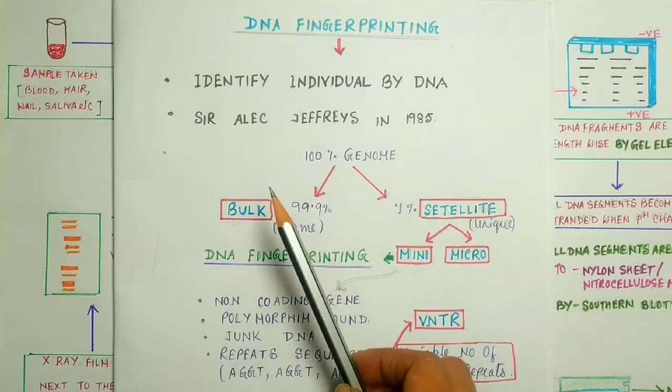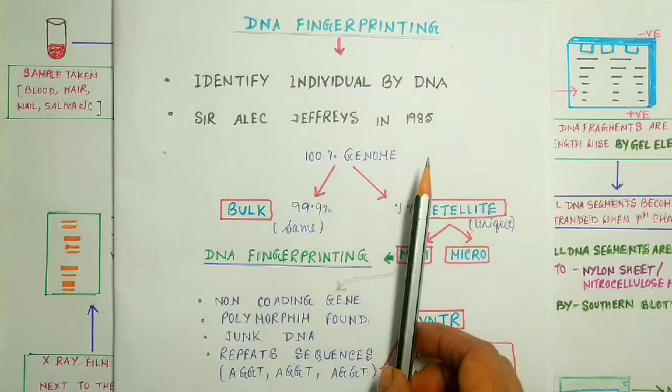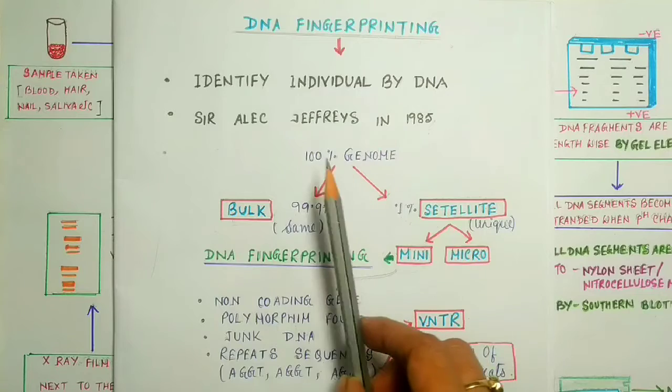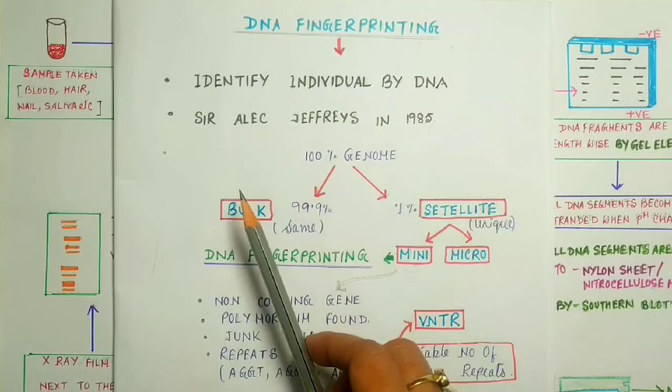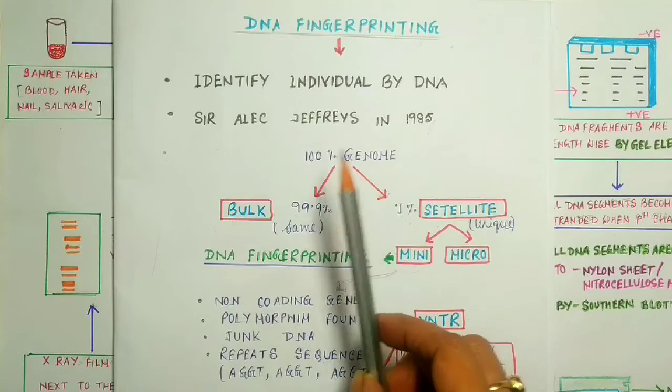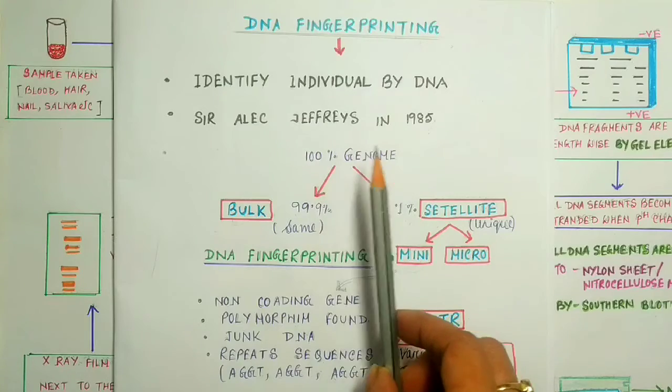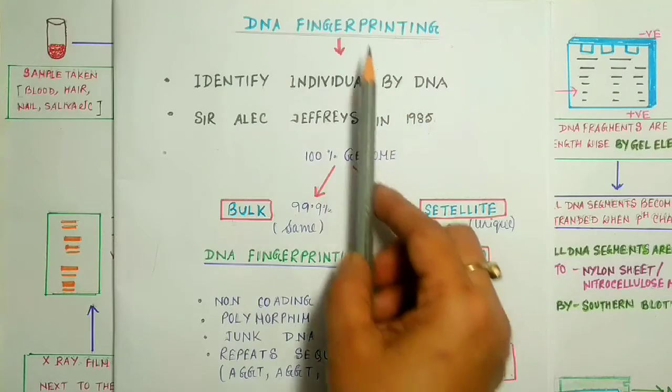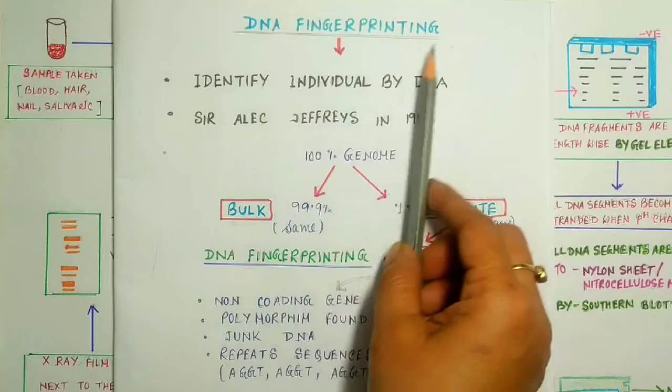As the fingerprint of an individual is unique, in the human genome there are some unique parts in each individual's body. By using the print of that particular unique DNA, this process is done. That's why the term DNA Fingerprinting is used.